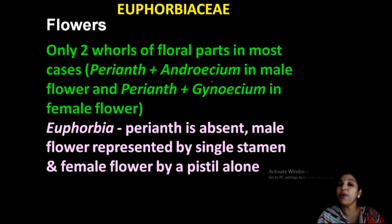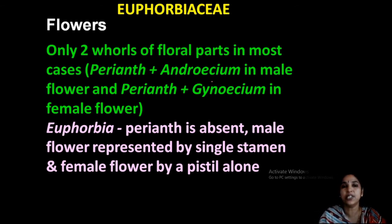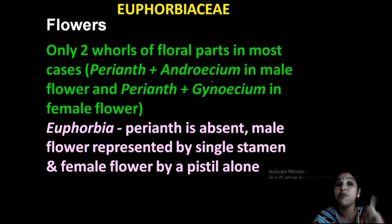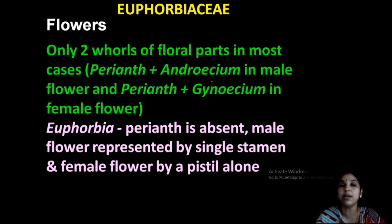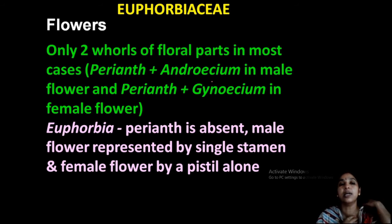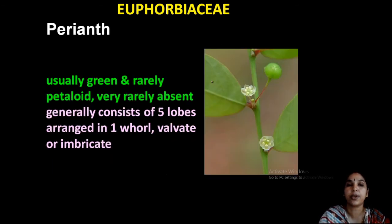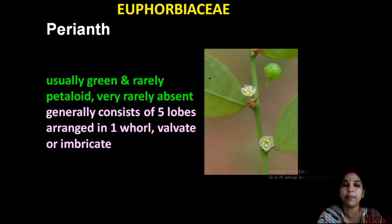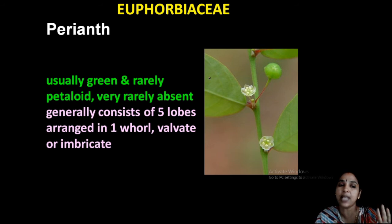In Euphorbia, perianth is usually absent. The male flower is represented by only a single stamen, and the female flower is represented by a pistil alone. Looking at the picture — this is the perianth, usually green but some may be colored. It is rarely absent. In Euphorbia it is absent. Usually containing five lobes — one, two, three, four, five whorls of perianth.